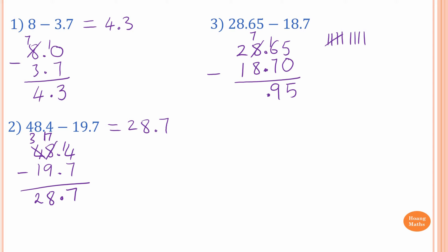7 take away 8 — you cannot do that, so we borrow 1 from 2. The 2 becomes 1, and 7 becomes 17. 17 take away 8: 10 take away 2 and 7 is 9. Or you go from 8 up to 17 using your fingers: 9, 10, 11, 12, 13, 14, 15, 16, 17 — it's 9. And then 1 take 1 is 0. So the answer is 9.95.